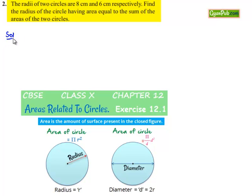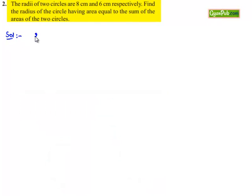Now moving on to the solution, let us consider the two radii of circles given as R1 equals 8 cm and R2 equals 6 cm.